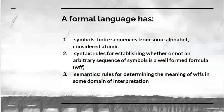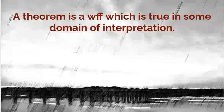We'll start with definitions. What's a formal language? A formal language has symbols, finite sequences from some alphabet which we consider to be atomic. There is a syntax, rules for establishing whether an arbitrary sequence of symbols is a well-formed formula, often written as WFF. There are also semantics, rules for determining the meanings of well-formed formulas in some domain of interpretation. Now a theorem is some well-formed formula that is true within some domain of interpretation.